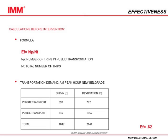Now for the calculations for the investigation. Effectiveness is the number of trips in public transportation divided by the total number of trips. This is before any intervention. The data source is the Belgrade Urban Planning Institute. We see the private transport numbers, public transport numbers, and total numbers. After the calculations, we get an effectiveness rate of 0.62.